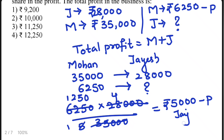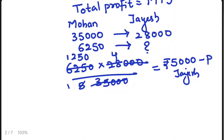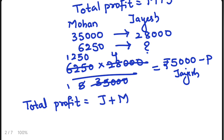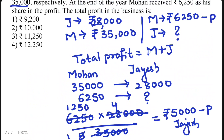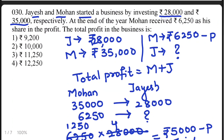Now, to find total profit, we add Jayesh's profit and Mohan's profit. Jayesh's profit is Rs. 5,000 and Mohan's profit is Rs. 6,250. Total profit = 5,000 + 6,250 = Rs. 11,250. You can see 11,250 in the third option — the answer is the third option.